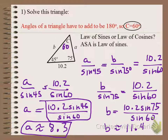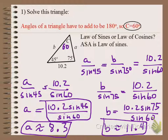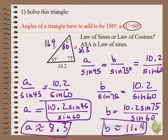As a last step, always make sure your triangle makes sense. Check that the smallest side is across from the smallest angle and the largest side is across from the largest angle. If you used radians instead of degrees, you might get a negative side value or something nonsensical. That's the Law of Sines — let's look at another example.